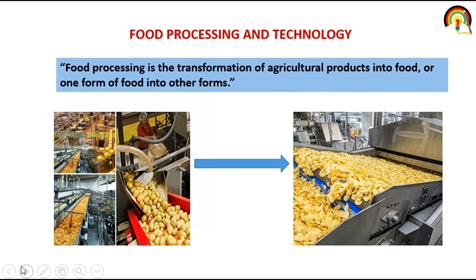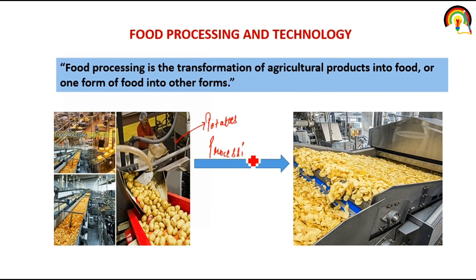So what is food processing? Food processing is the transformation of agricultural products into food, or one form of food into another form. For example, there is an agricultural product — potatoes — and after processing it converts into an eatable form. So that is food processing: conversion of one form of food into another form, or conversion of raw material into final product.